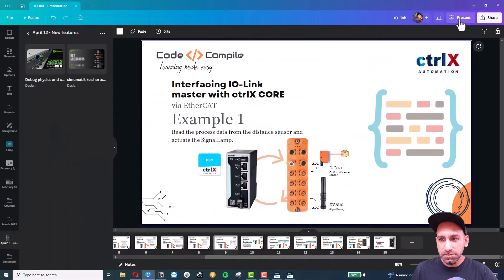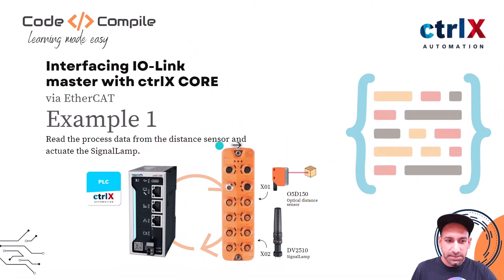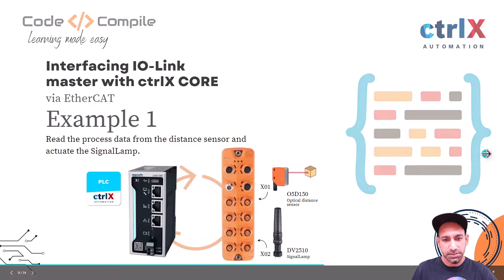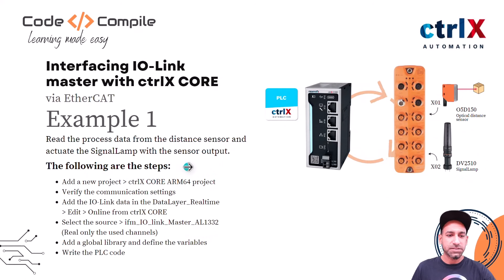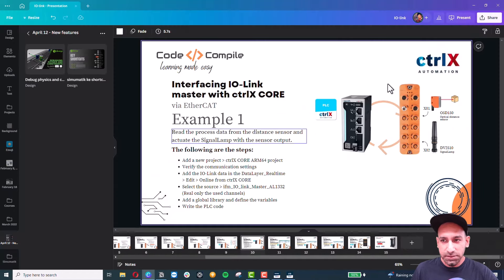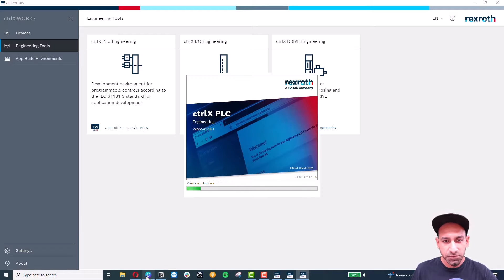The next step is an example: we need to read process data from the distance sensor and actuate the signal lamp using PLC code. We will open the PLC engineering app. The first step is to add a new project — go to File, New Project, select ControlX Core ARM64 as the controller, name the project, and click OK. Then verify the communication settings by right-clicking the device, entering the correct IP address, and running a test.